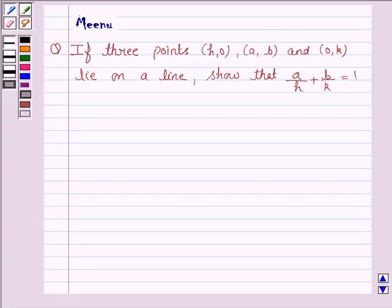Hello friends, let's discuss the following question. If three points (h,0), (a,b), and (0,k) lie on a line, show that a/h + b/k = 1.